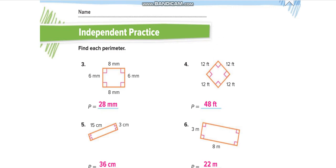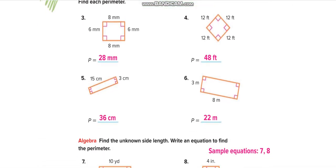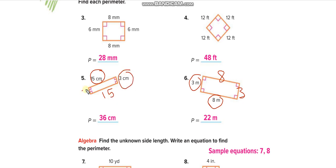For independent practice, I hope you can finish it by yourself, but here are some important things. If this side is 8, the opposite side is also 8. If this side is 15, the opposite must also be 15. If this is 3, that is also 3. Now add all four sides to find the perimeter.